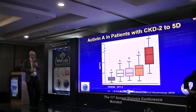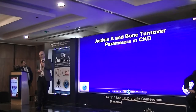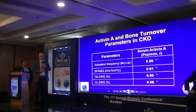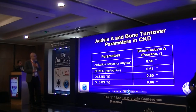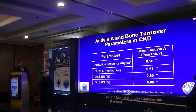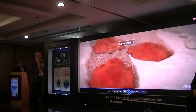Activin A has been associated with increased bone turnover, so it's one of the serum biomarkers that we can use to examine the turnover. As you see here, this is the article that we have published, and Activin A serum level correlates very well with activation frequency, bone formation rate over bone surface, osteoblast and osteoclast function. So it's a very good biomarker for bone turnover disease. Now we have antibodies that we can target this activin and control the bone turnover.